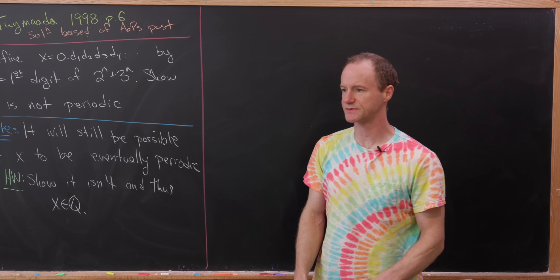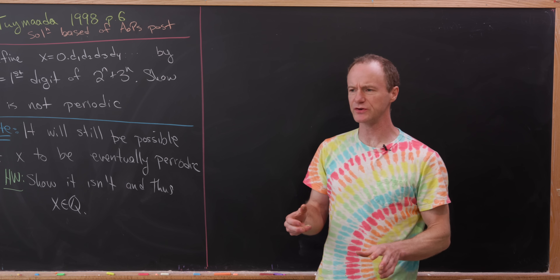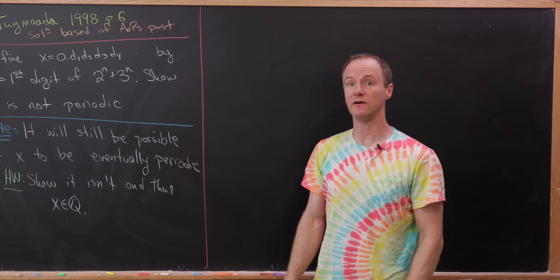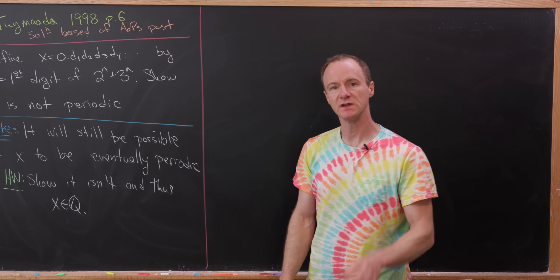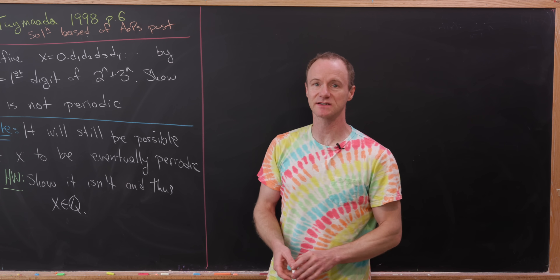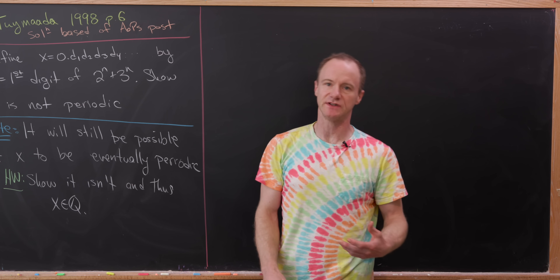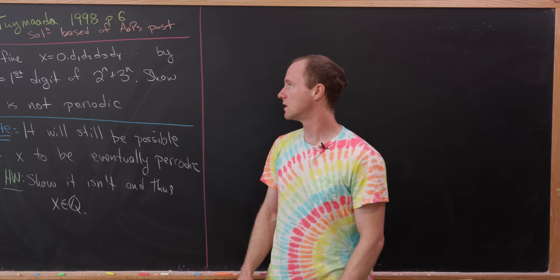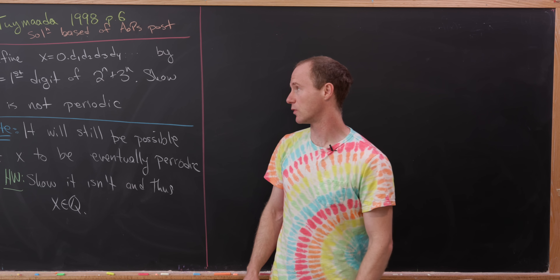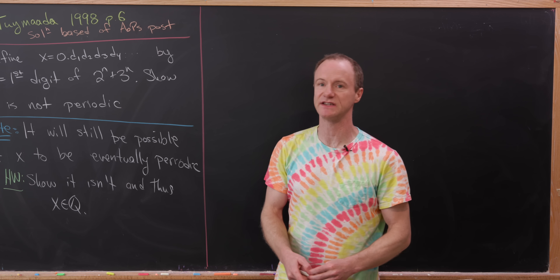Today we're going to look at a really nice math contest problem that hints towards a strategy for producing a new or lesser-known family of irrational numbers. We want to define a number x via its digits: x = 0.d₁d₂d₃... by the rule that d_n, the nth digit past the decimal point, is the first digit of 2^n + 3^n.